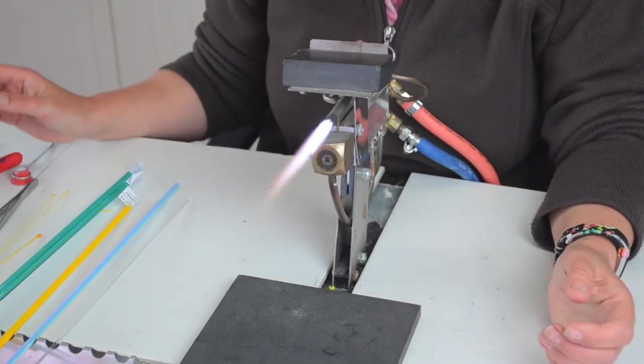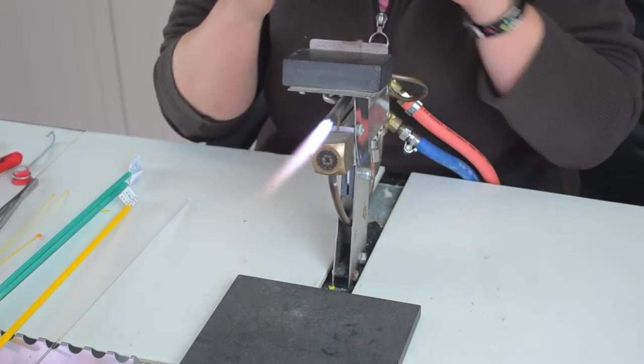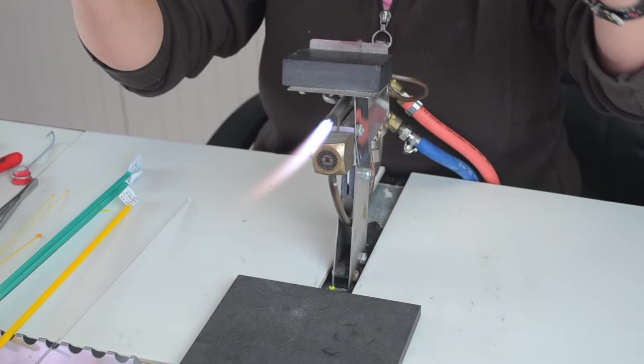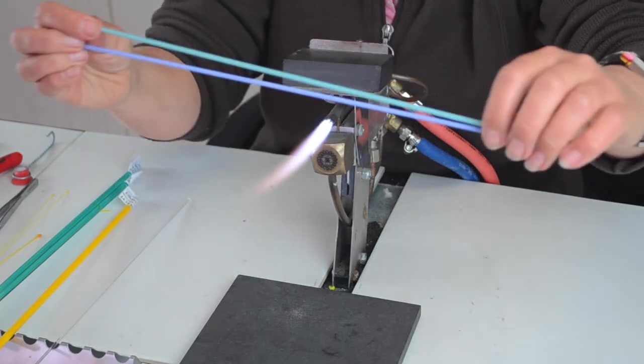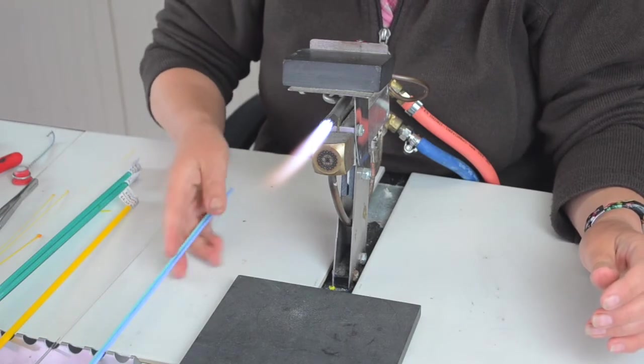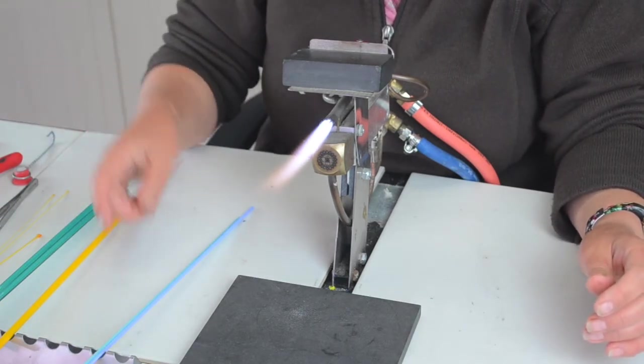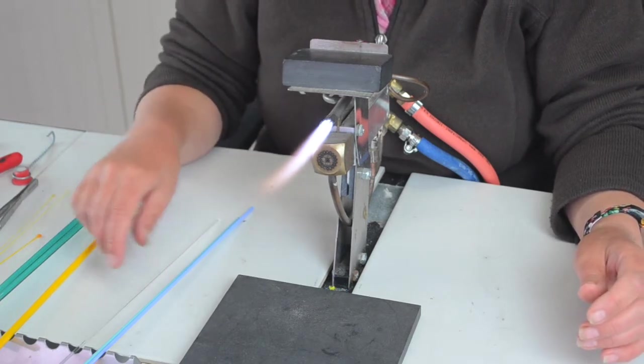Today we're going to talk about stringers. Stringers come in many forms. We sell commercial stringers that are already pulled, about this thickness. Different colors, and that clear one is even thinner. You can also pull your own, so I'll show you how to pull your own as well.